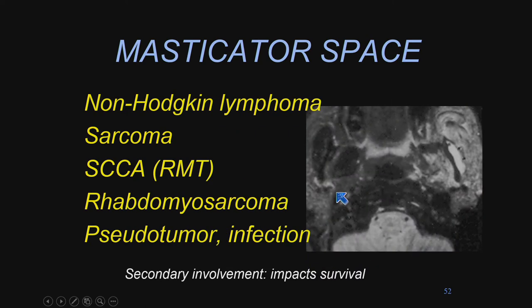What can arise in this compartment? We can get lymphoma, sarcoma, squamous cell carcinoma arising on the retromolar trigone, or secondary involvement of the masticator space — which will negatively impact survival. It's a significant effect on prognosis if there is secondary involvement of the masticator space.